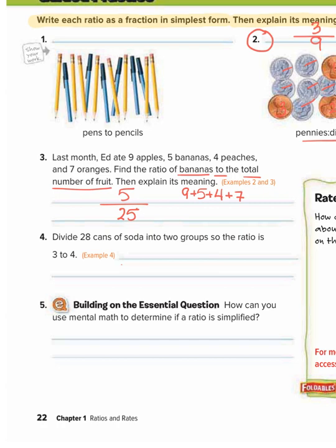So we have five to 25, which we can simplify to one fifth. So what that means is for every one banana, there's 25 fruit, or for every 25 fruit, one of them is a banana.